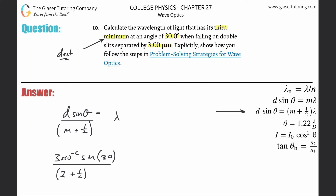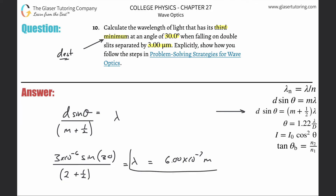Multiply that out at the top: three times ten to the minus six, times sine of 30 — make sure you calculate in degree mode. Divide by 2.5, and we get 6.00 times ten to the minus seven meters. In micrometers that's 0.6 micrometers, or in nanometers that's 600 nanometers.